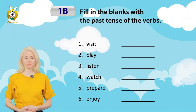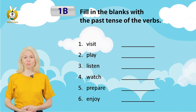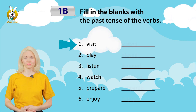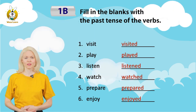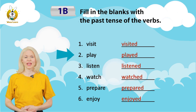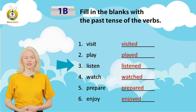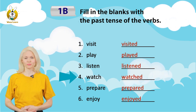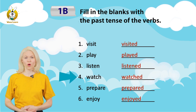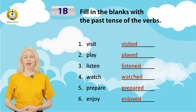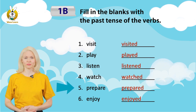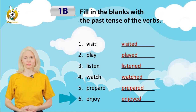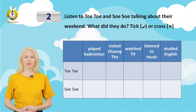One B. Fill in the blanks with the past tense of the verbs. One: Visit – Visited. Two: Play – Played. Three: Listen – Listened. Four: Watch – Watched. Five: Prepare – Prepared. Six: Enjoy – Enjoyed.